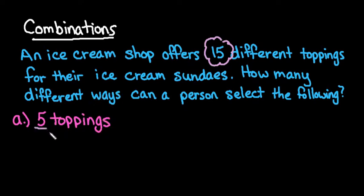The first one we're going to do is five toppings. The reason it's a combination and not a permutation is because the order doesn't matter. Let's say I picked hot fudge as my first topping and sprinkles as my second. If I happen to pick sprinkles first and then hot fudge, it doesn't make a difference because it's the same combination.